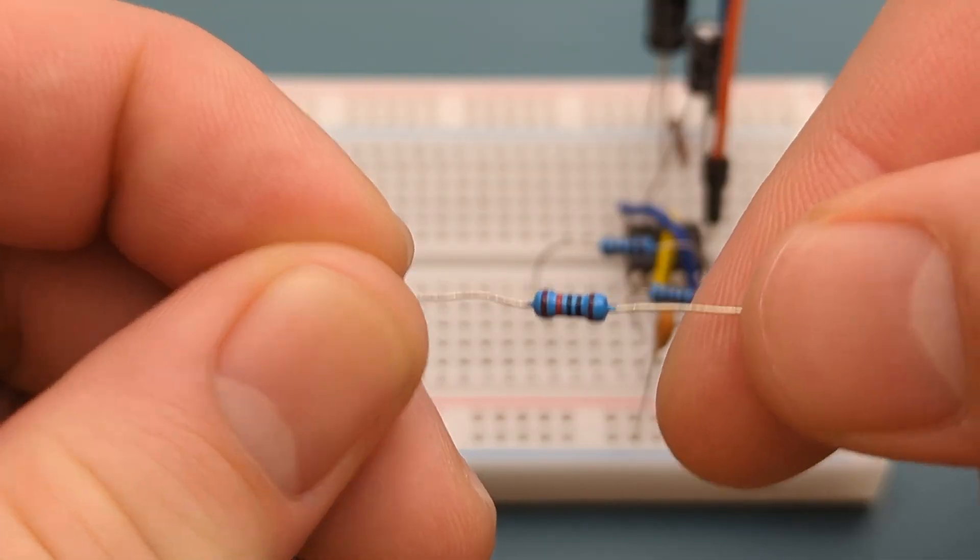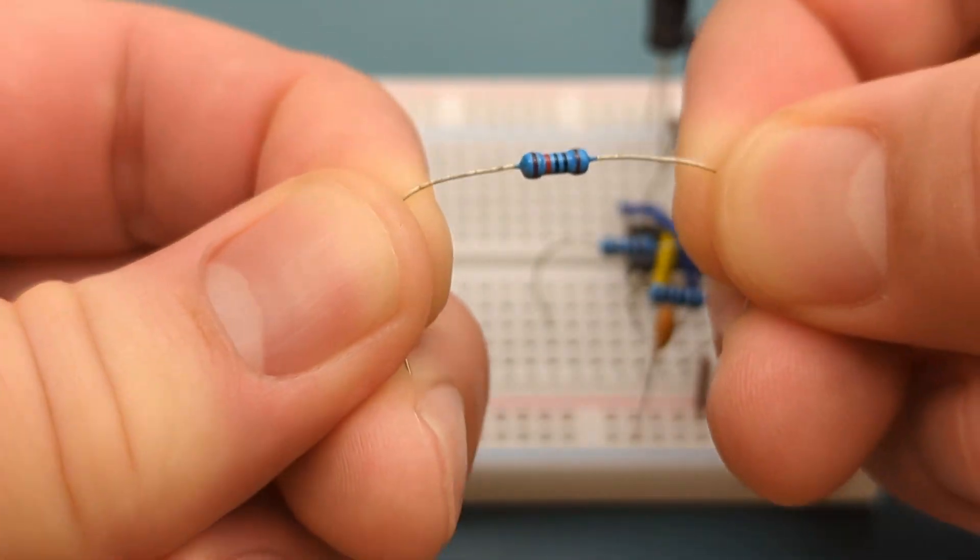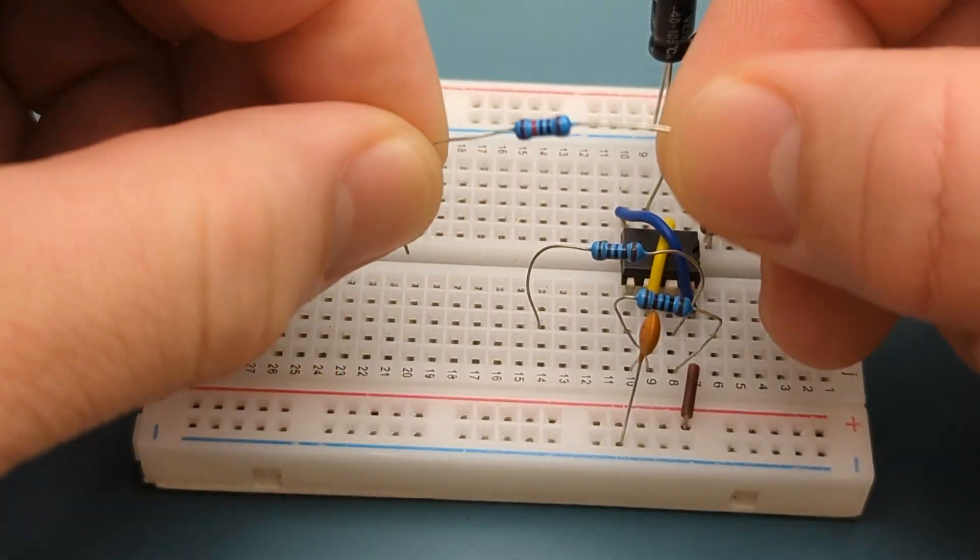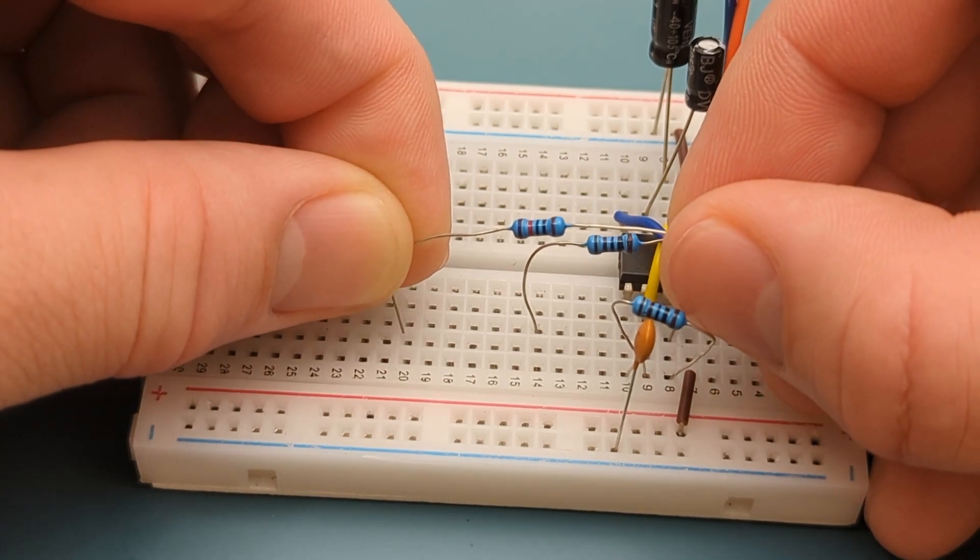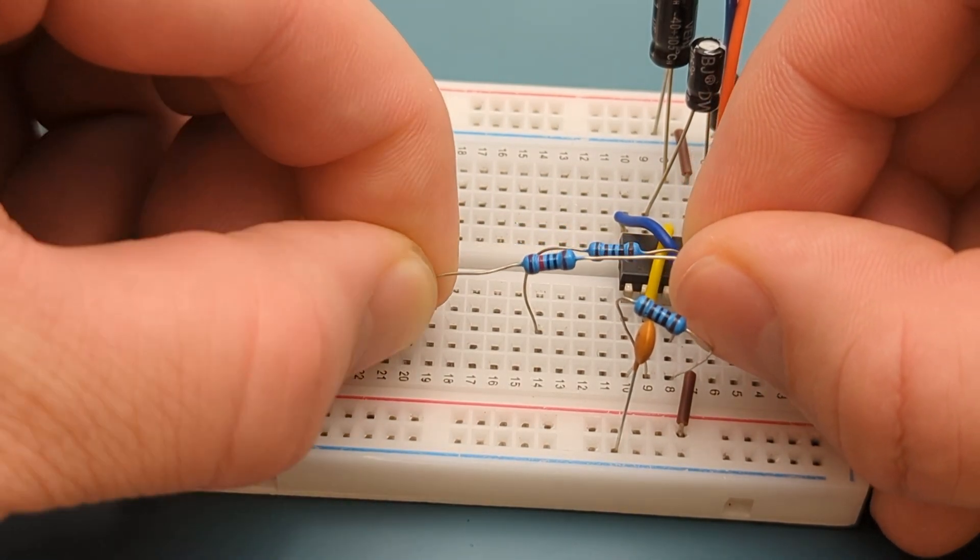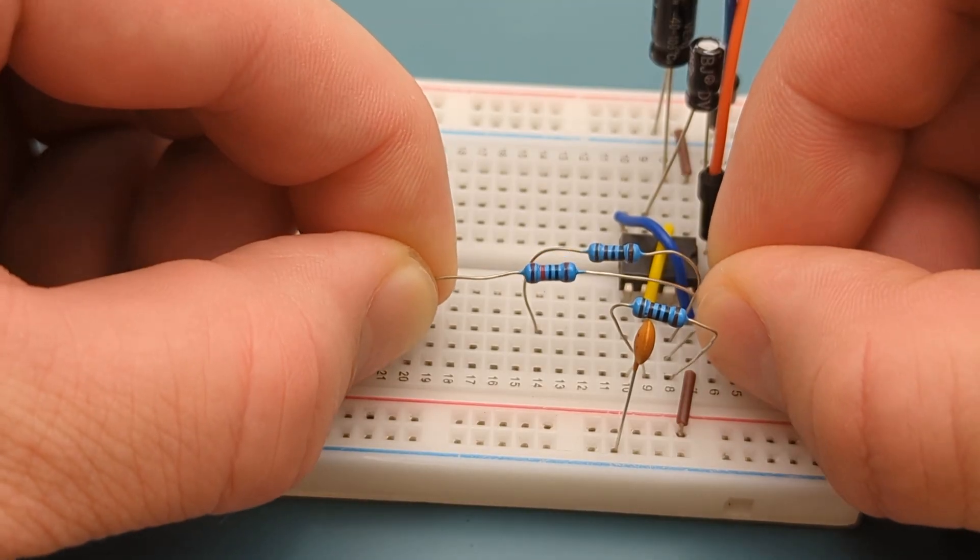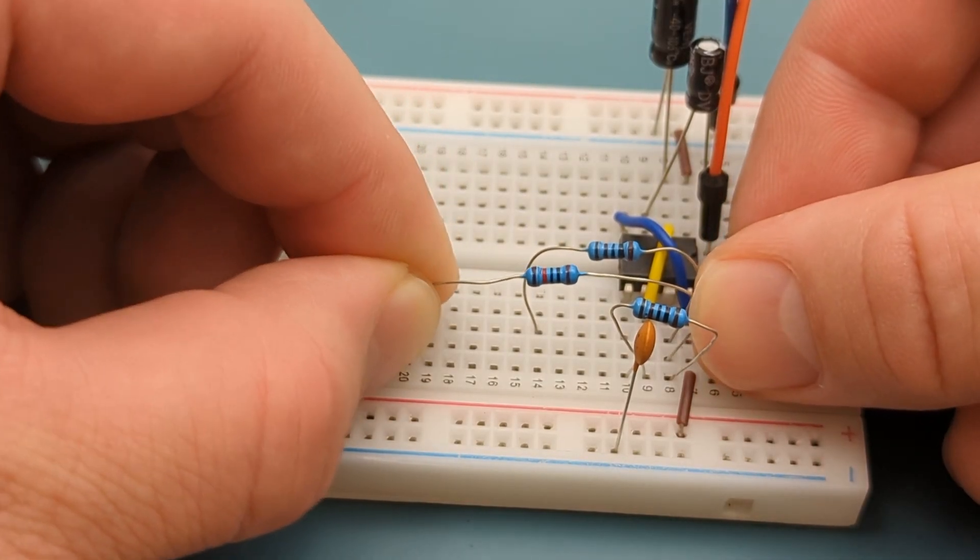Bend the ends of a 10,000 ohms resistor. Insert the 10,000 ohms resistor into pin 7 or discharge and many more rows below the 555 timer. These resistors will be wired to the push button switches.